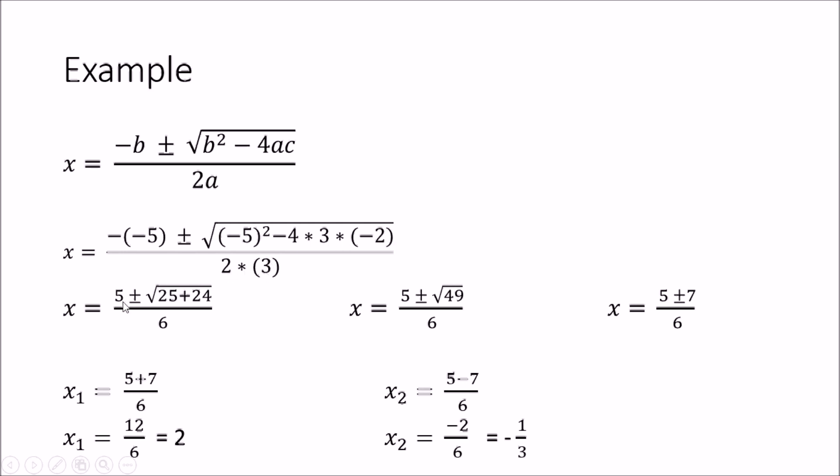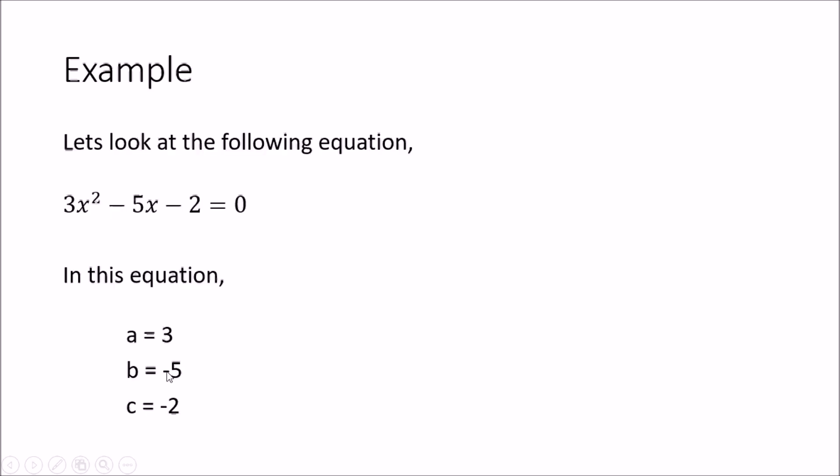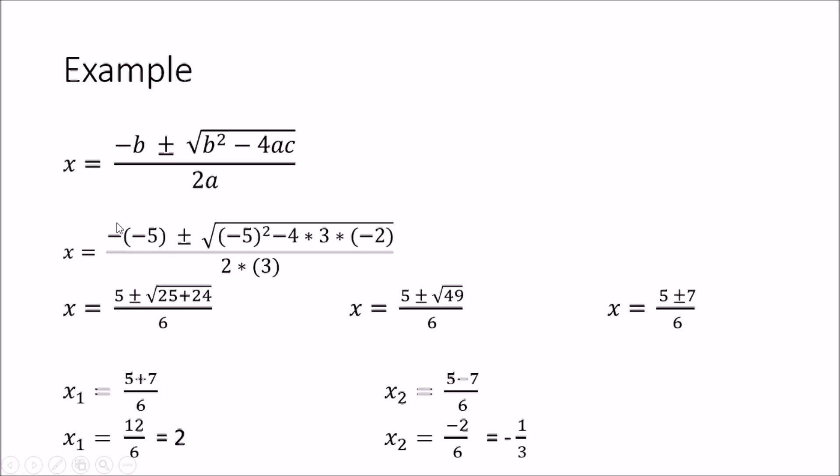Once you simplify this one you will get +5 as I told you earlier. This minus along with the minus will be multiplied and it will become +5 and ±√(25 + 24), and you will get the square root of that, which will be 7. So finally you will get x = (5 ± 7) / 6.